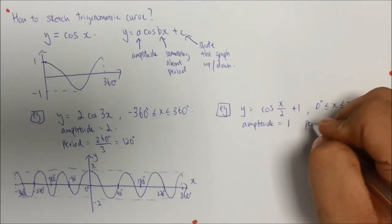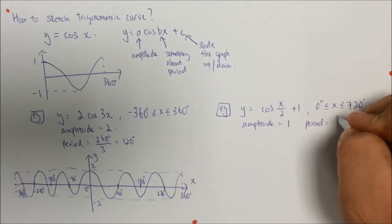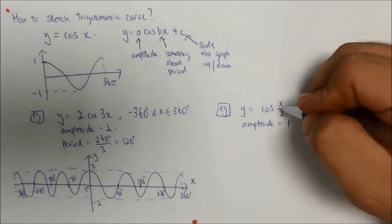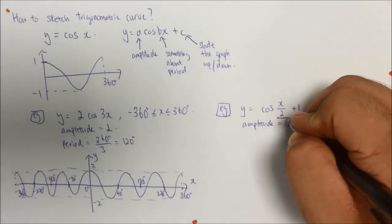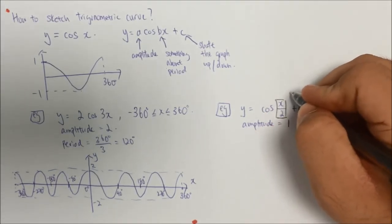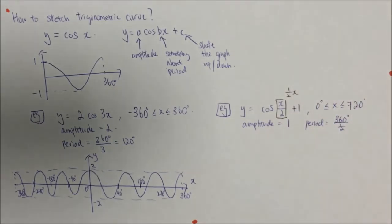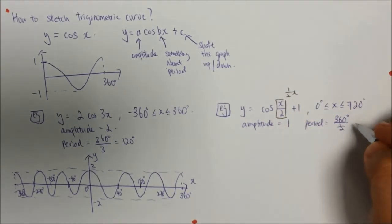Your period is equals to 360 degrees divided by half. Why half? Because x over 2. We can see x over 2 as half x, so we can take the half over here. And now we know that our period will be 720 degrees.